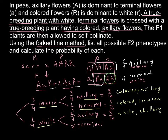Finally, one quarter multiplied by one quarter equals one over sixteen — these are white terminal plants.